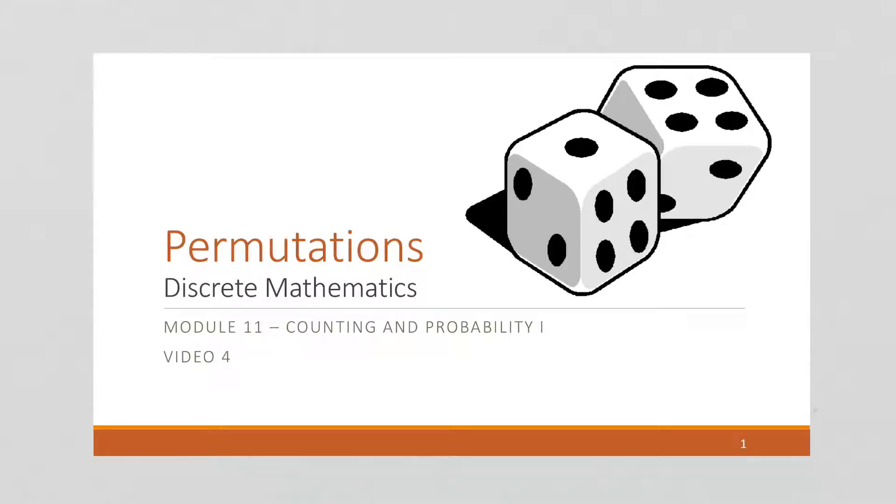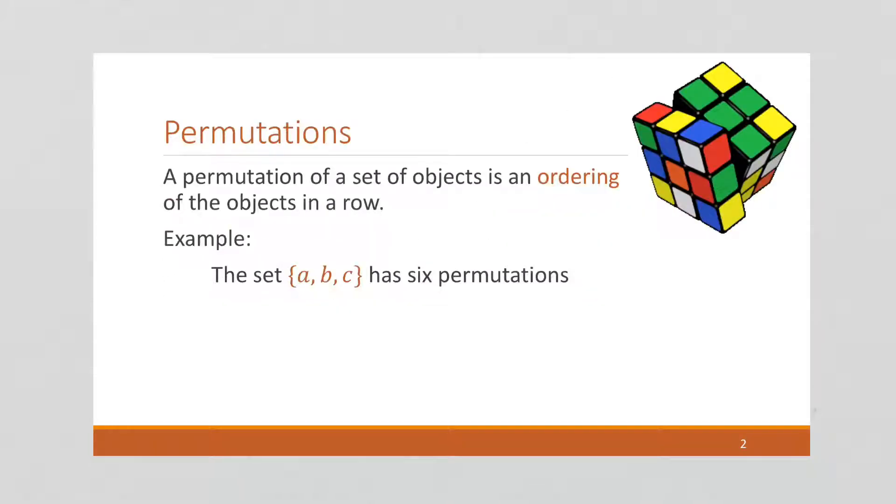In this video, we're going to talk about permutations. Permutations are the number of ways of ordering a set of elements. So we want to order elements in a row.